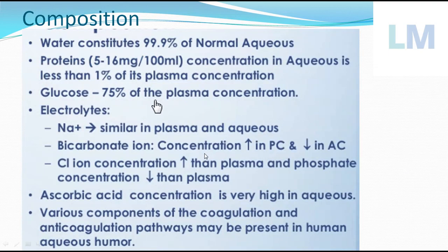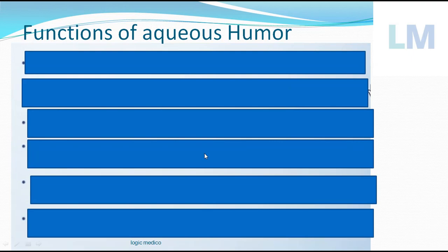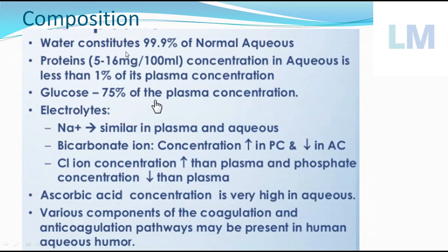The composition of aqueous humor: it contains mainly 99.9% water. The remaining 0.1% includes other things — number one, protein at 5 to 16 milligrams per 100 ml, which is less than 1% of plasma concentration, so that the aqueous humor will not become hazy. Glucose is approximately 75% of the plasma concentration of glucose.